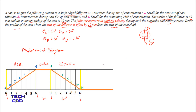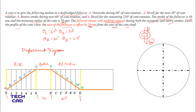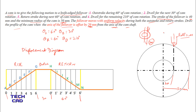To make the cam profile, first draw a circle of 50 mm radius, which is the minimum radius of the cam. Draw the axes of the cam. Now draw another circle of 20 mm radius — this represents the offset. Extend a small line from here; this line represents the axis of the follower, which is offset by 20 mm from the axis of the cam.